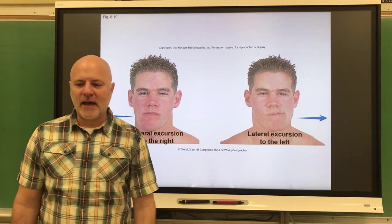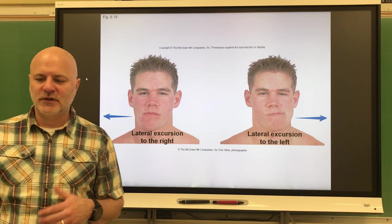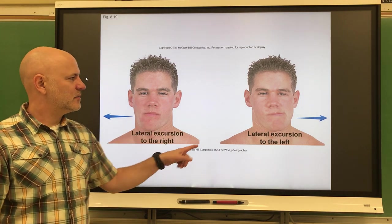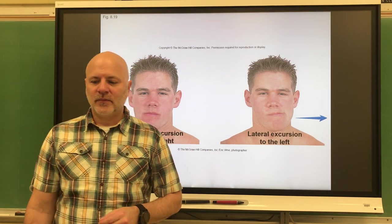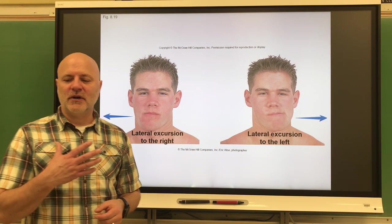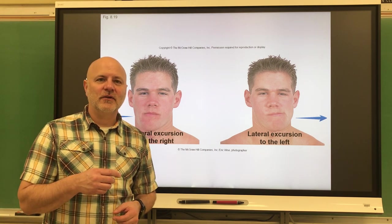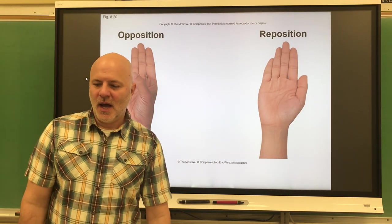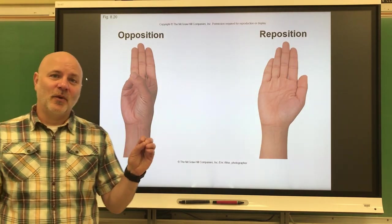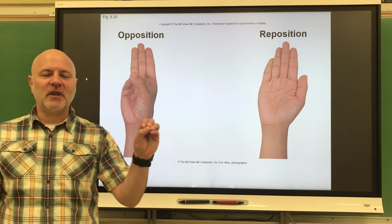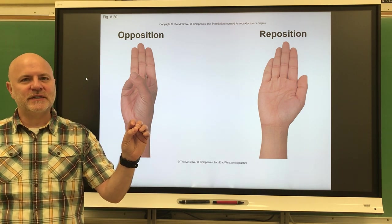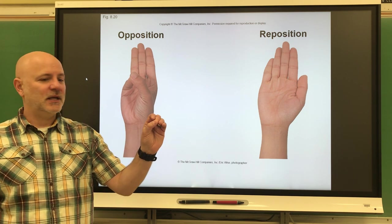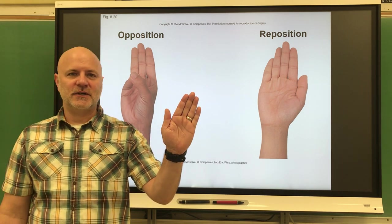Lateral excursion is moving the mandible to either the right or left side of the midline. Medial excursion is returning the mandible to the neutral position — back to the midline. Finally, opposition is moving the thumb towards the other fingers — our opposable thumbs — and reposition is moving the thumb back to the neutral position.